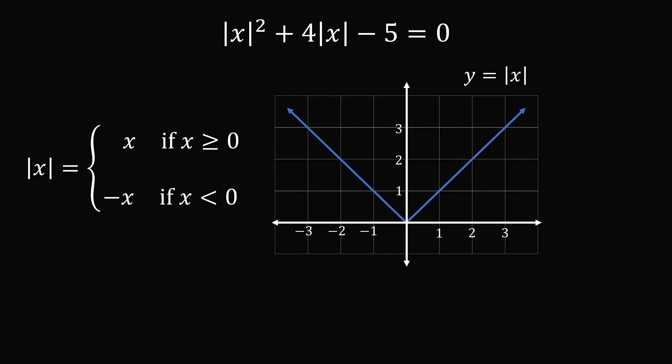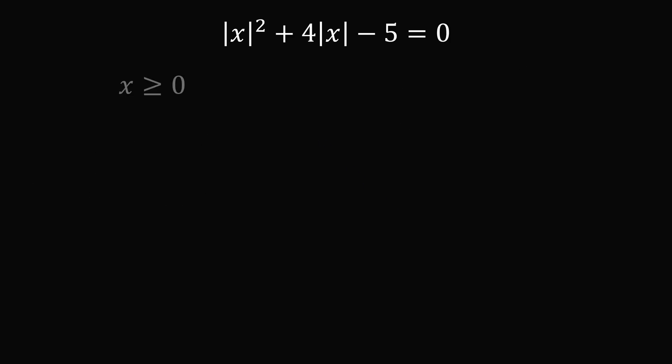To solve this problem, we'll consider each case separately. First, we'll consider if x is greater than or equal to 0. In that case, the absolute value of x is equal to x, so we can drop the absolute value signs, and we get the equation x squared plus 4x minus 5 is equal to 0.